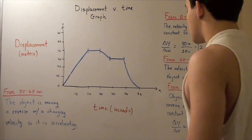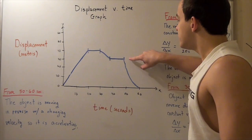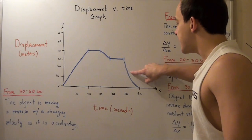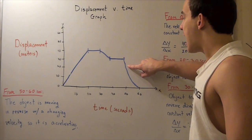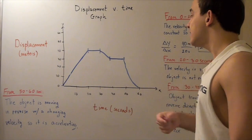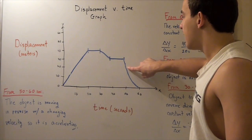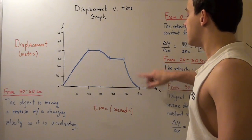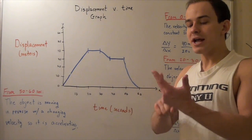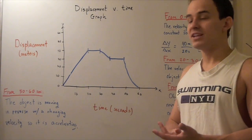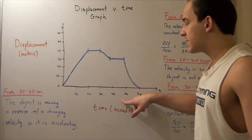Now let's look at the final period, from fifty to sixty seconds. Here our slope is not constant — it's changing. Initially the slope is very steep going downward, so it's steep in a negative direction, meaning our velocity is no longer constant; it's changing the entire time. Our object is in fact accelerating because both the direction and magnitude of the instantaneous velocity are changing at every given point in time on this interval.